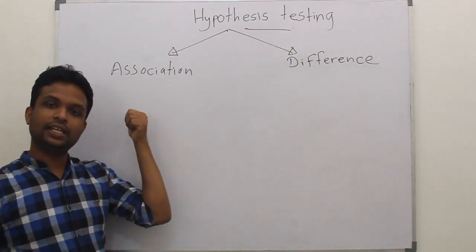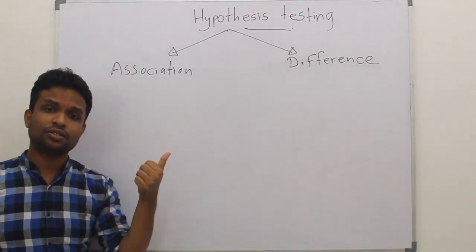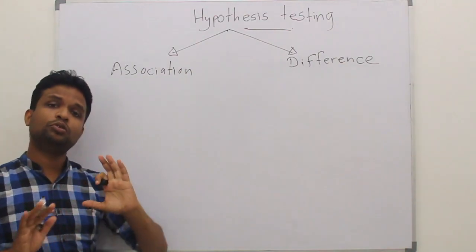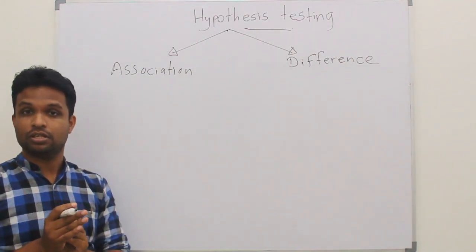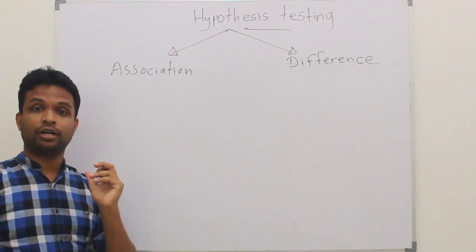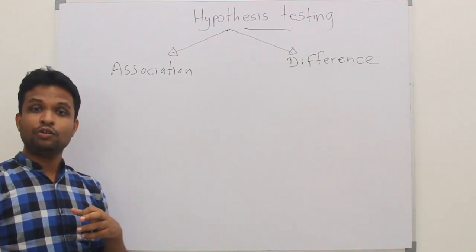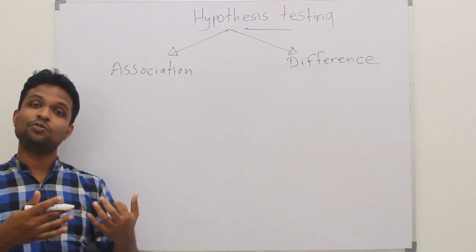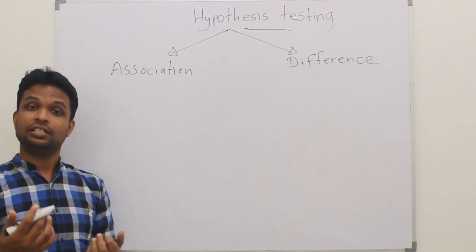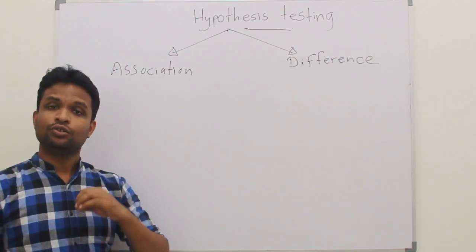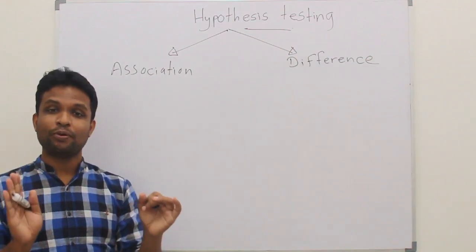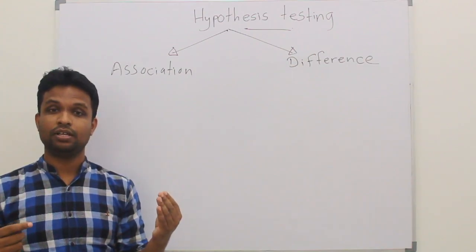What do you mean by association? In association, if we think about two variables, we can consider the amount of salt that you consume per month and the blood pressure. How do we test this? In order to test, we can plot these two variables.